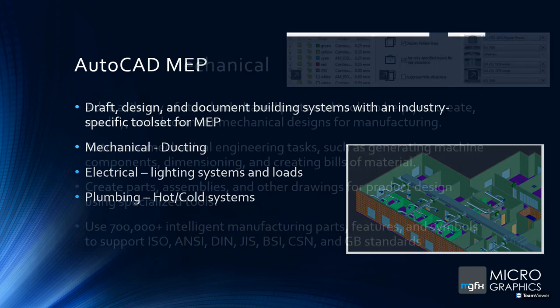Then on to the mechanical stuff. AutoCAD Mechanical, if you've worked with Inventor or any other 3D solid modeling package, is like a 2D version of that. You can create 2D objects or blocks — say a front view, side view, and top view of a part — name them, and pull out a bill of materials. It's intelligent enough to know that multiple views represent just one part, so you get the correct part count in your BOM.